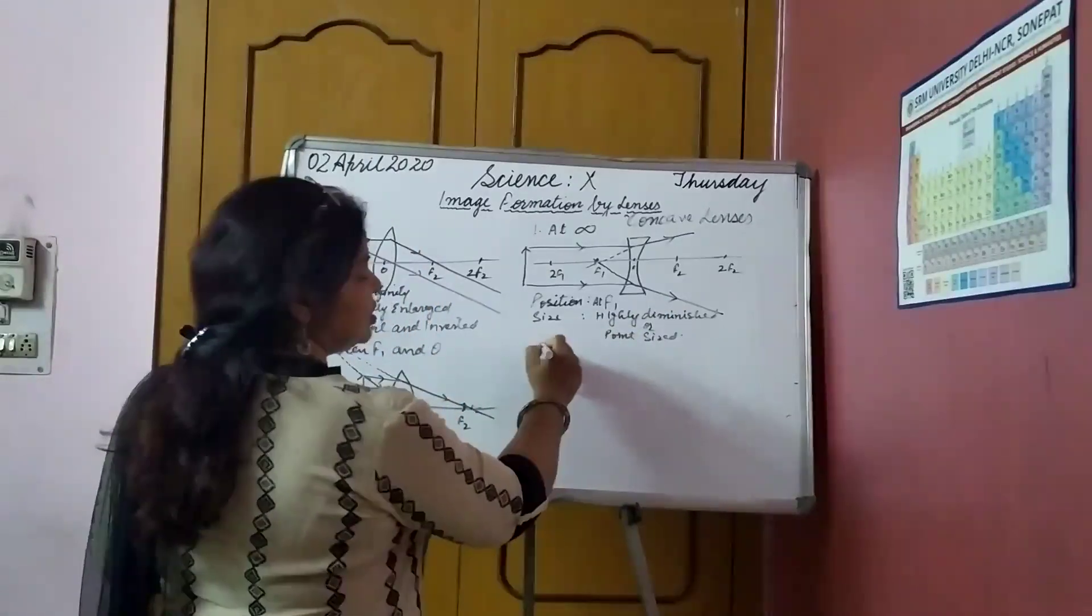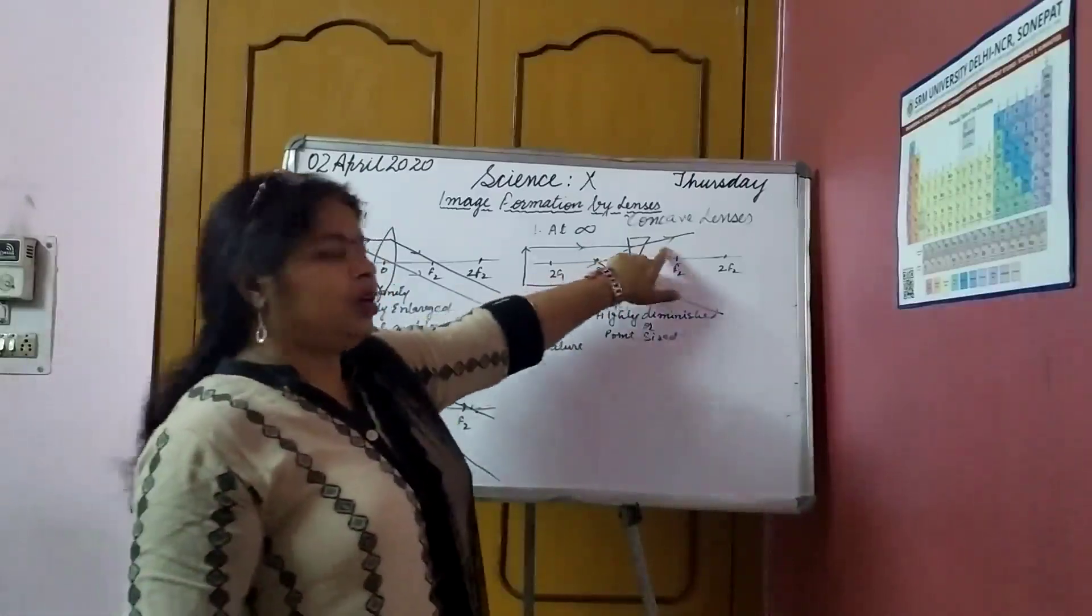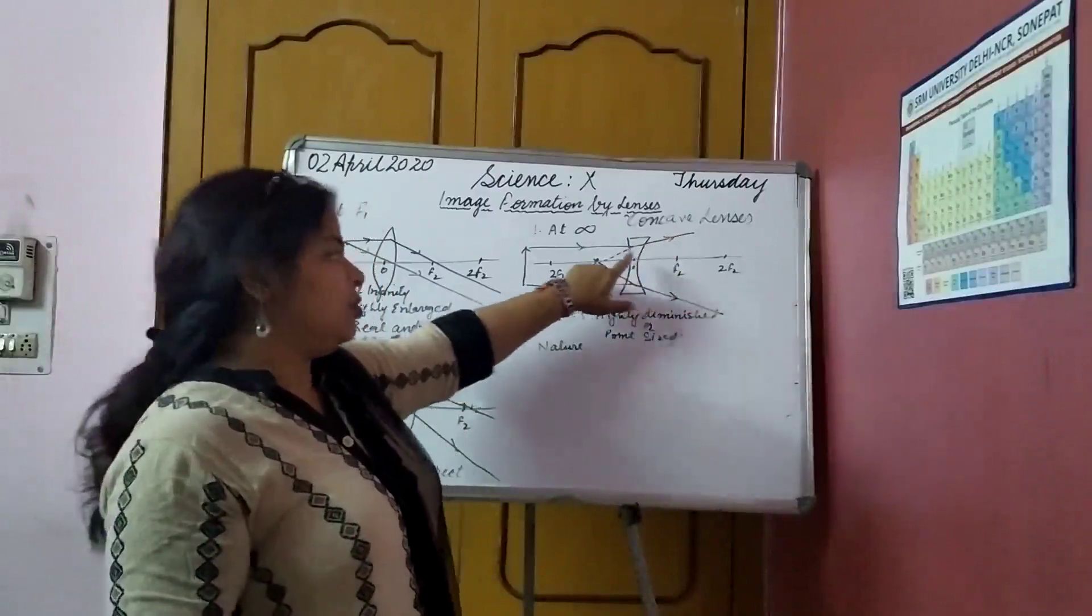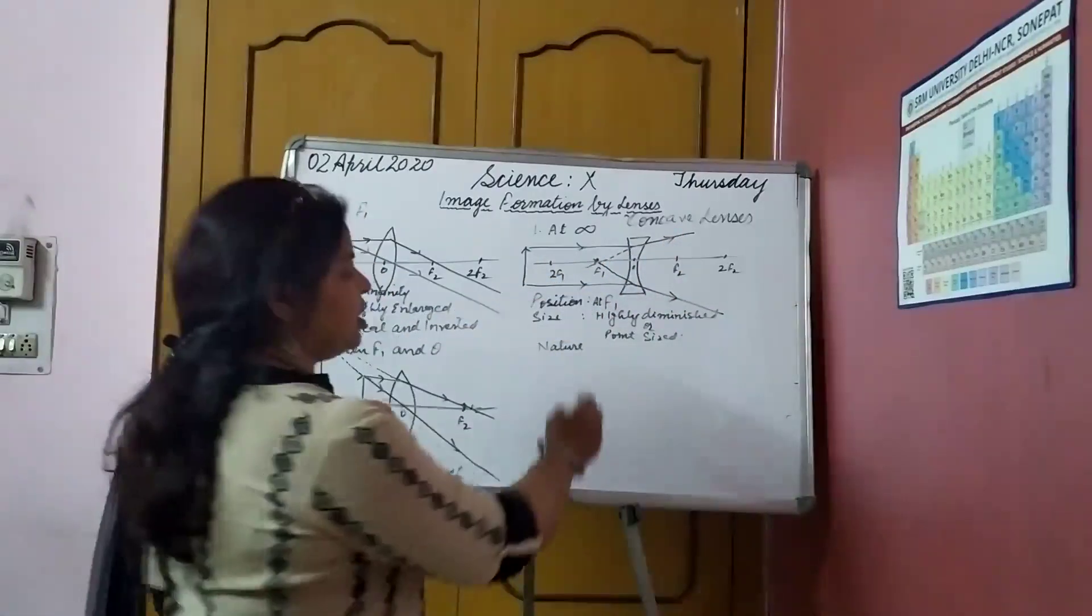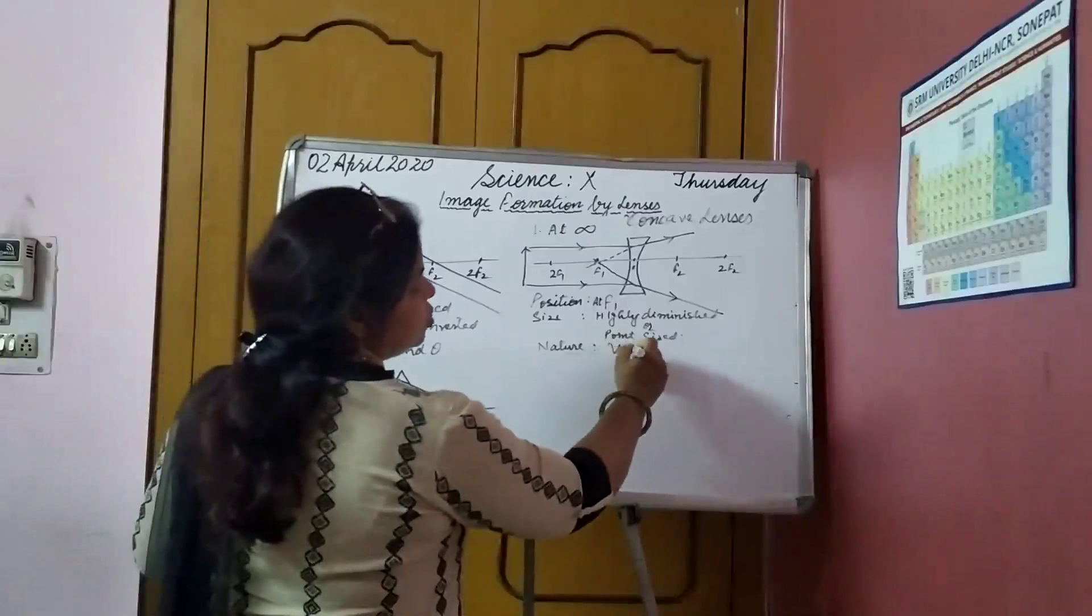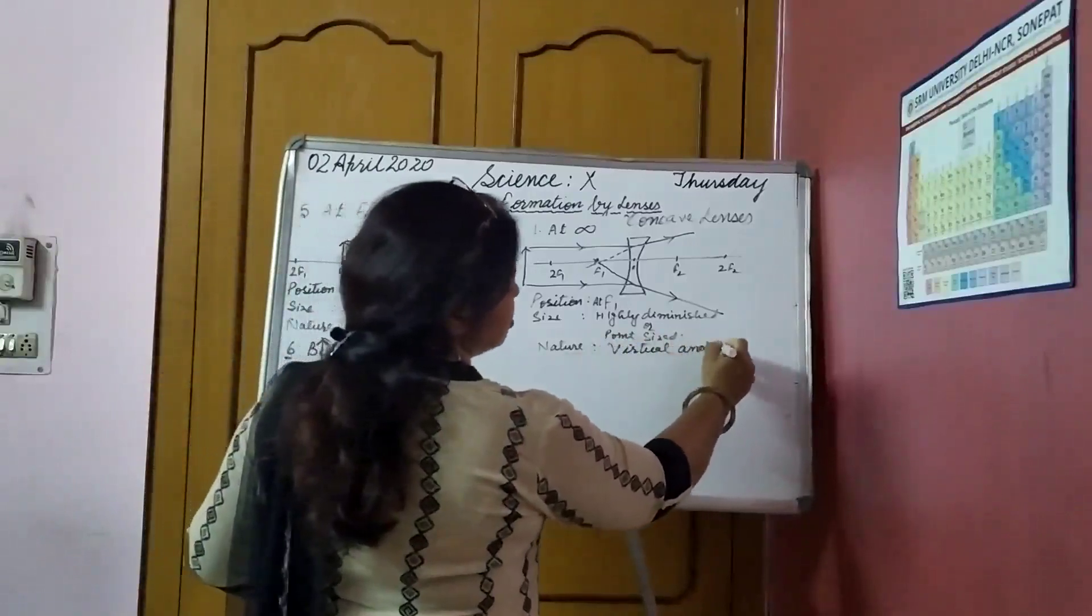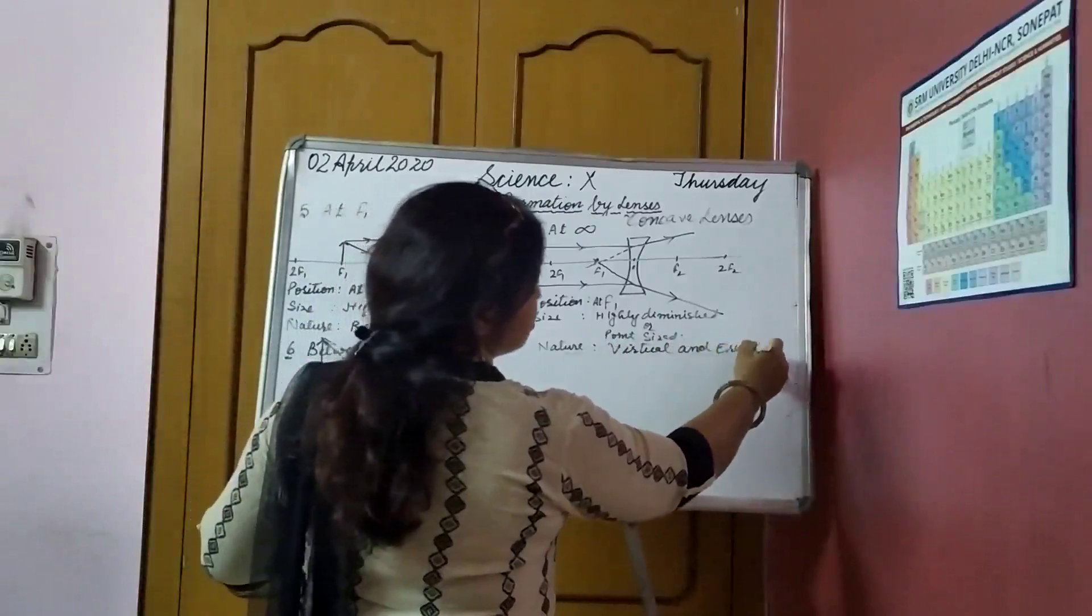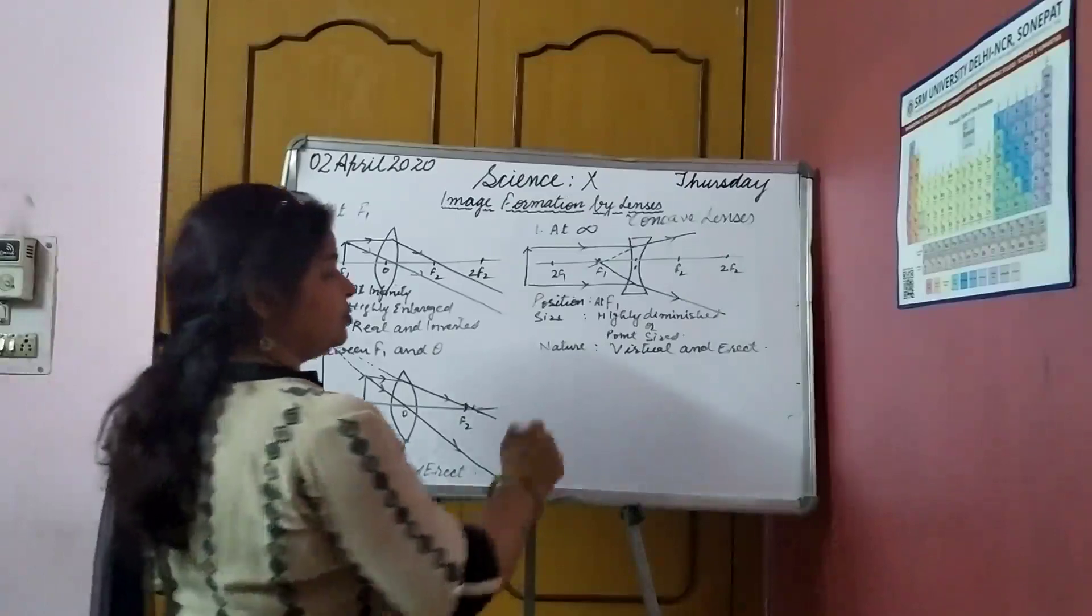Then, what is the nature? Actual refracted rays, they are moving apart. We are extending them, making them virtually meet here. So, the nature is virtual and erect. Virtual and erect.